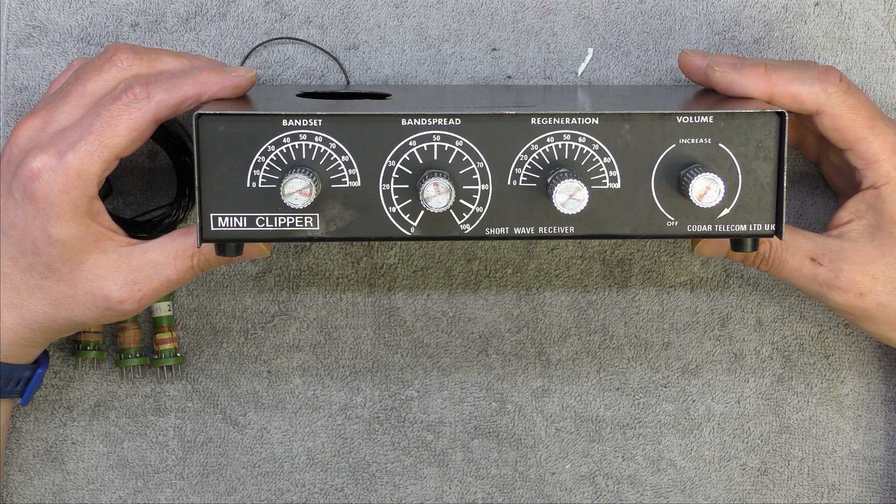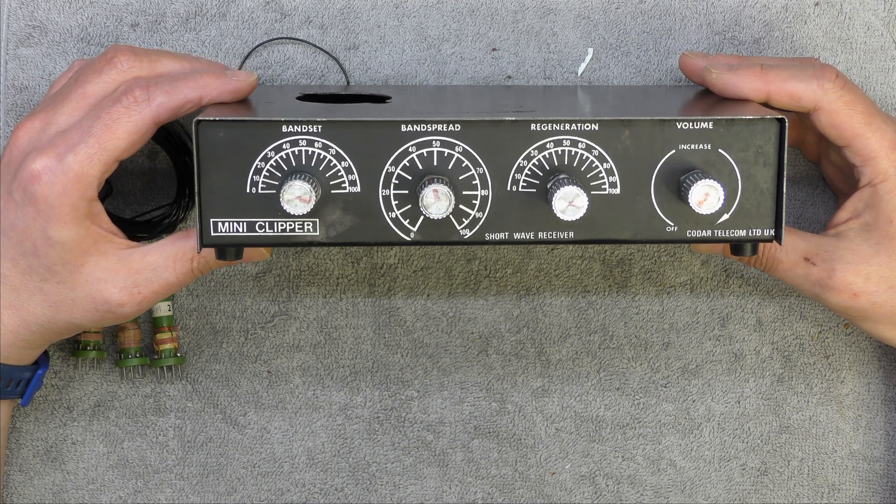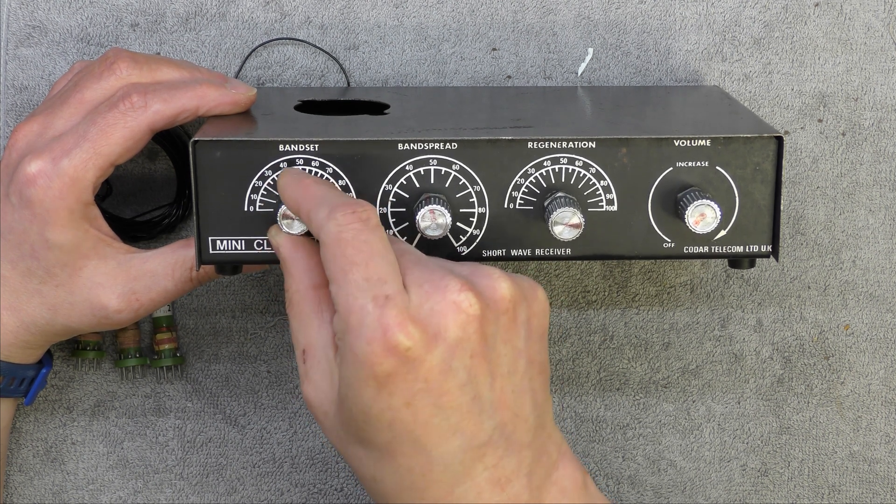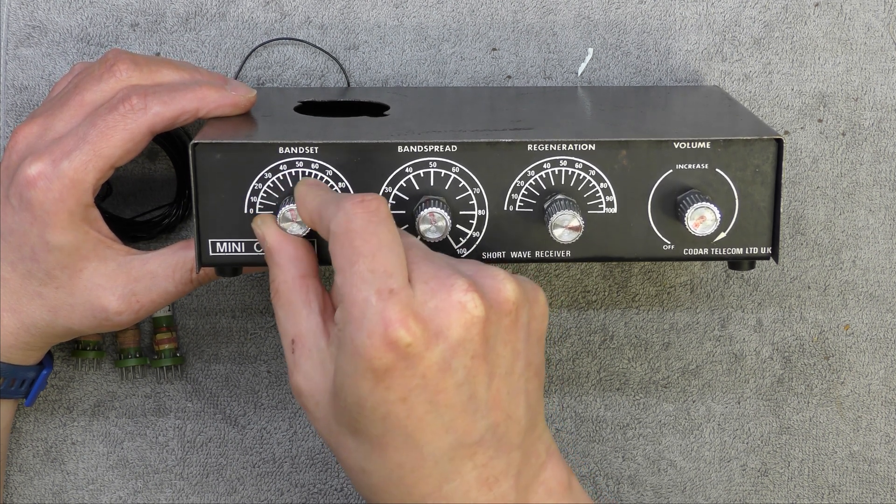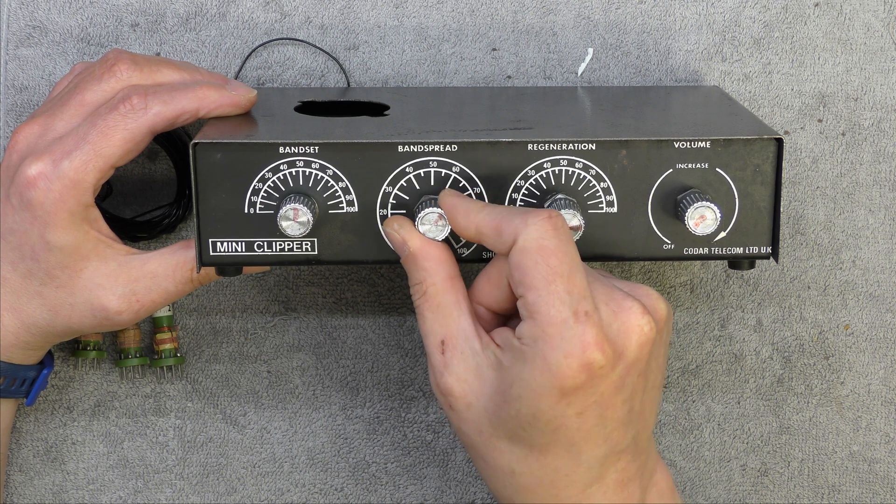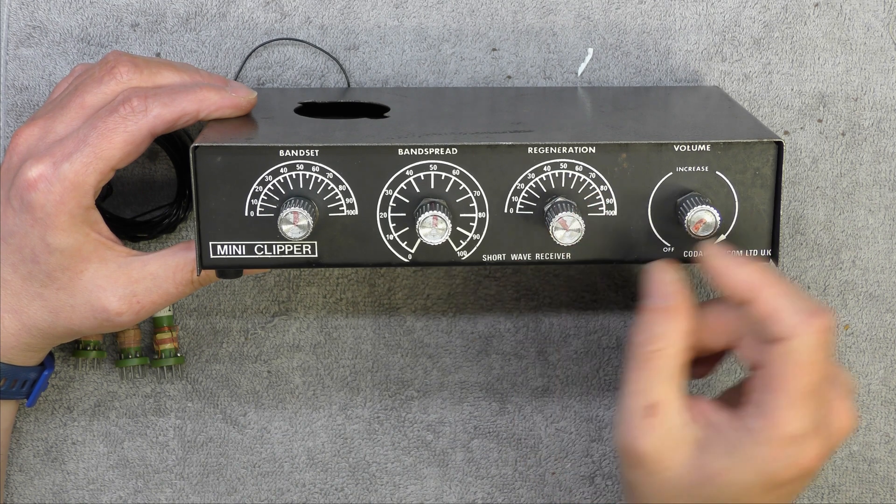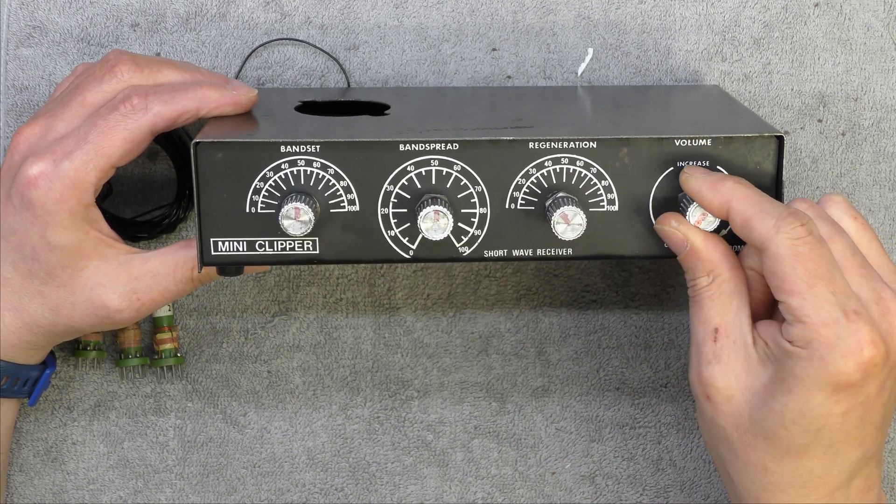This one is all transistorized. Basically you've got a band set which is your main tuning control, you've got a band spread which is your fine tuning control, a regeneration control, and an off and volume control.